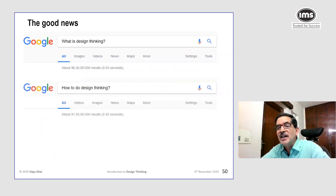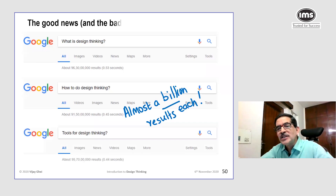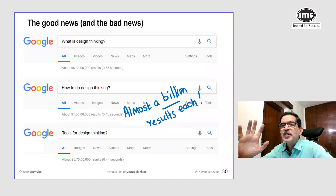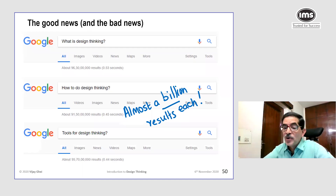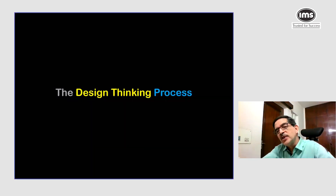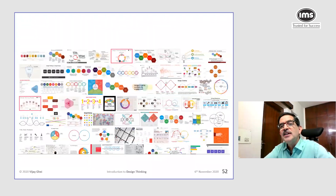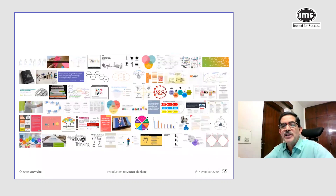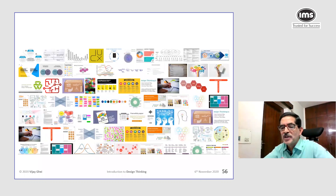When you search 'design thinking,' 'how to do design thinking,' or 'design thinking process' on Google, you get about a billion responses each time. The good news is there is an enormous amount of information available on this topic. The bad news is you really don't know where to start. There are about two and a half thousand different ways of doing design thinking — there is no single method. Again, there is an enormous amount of choice.